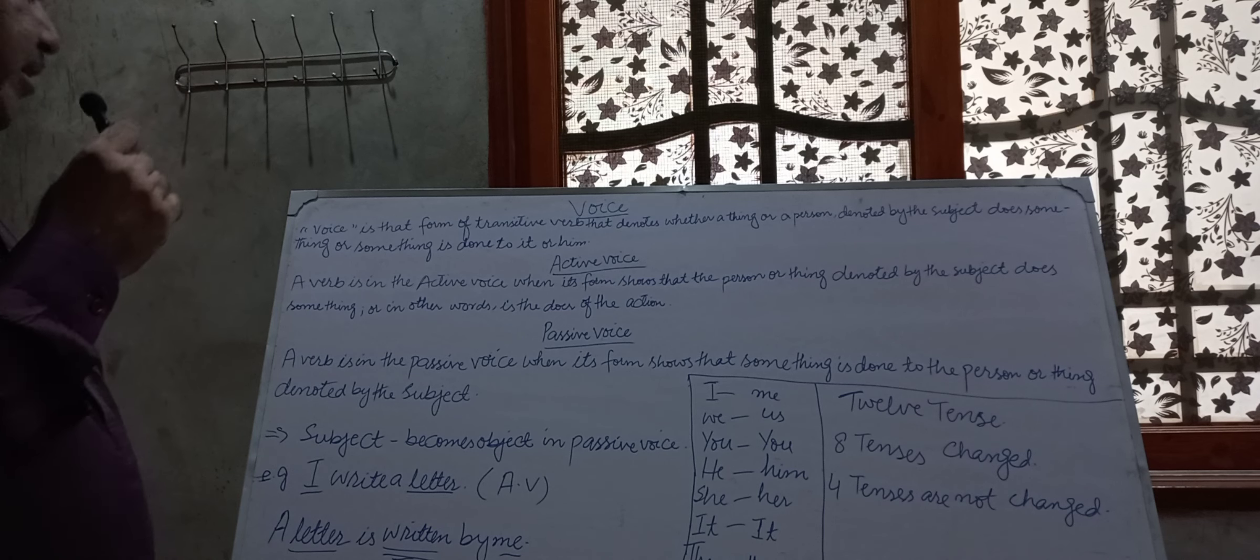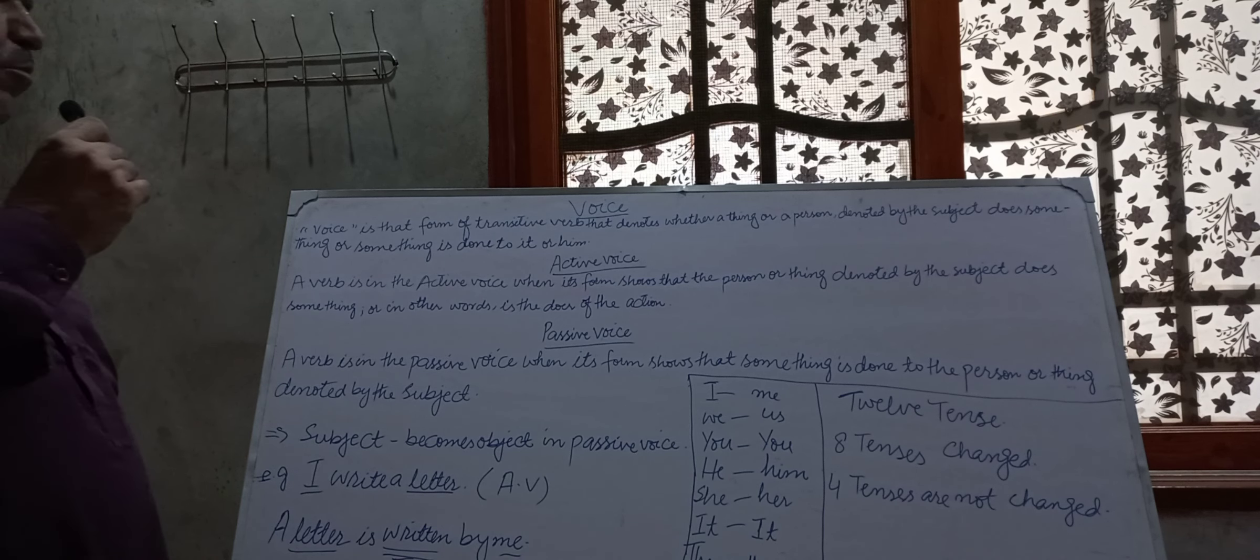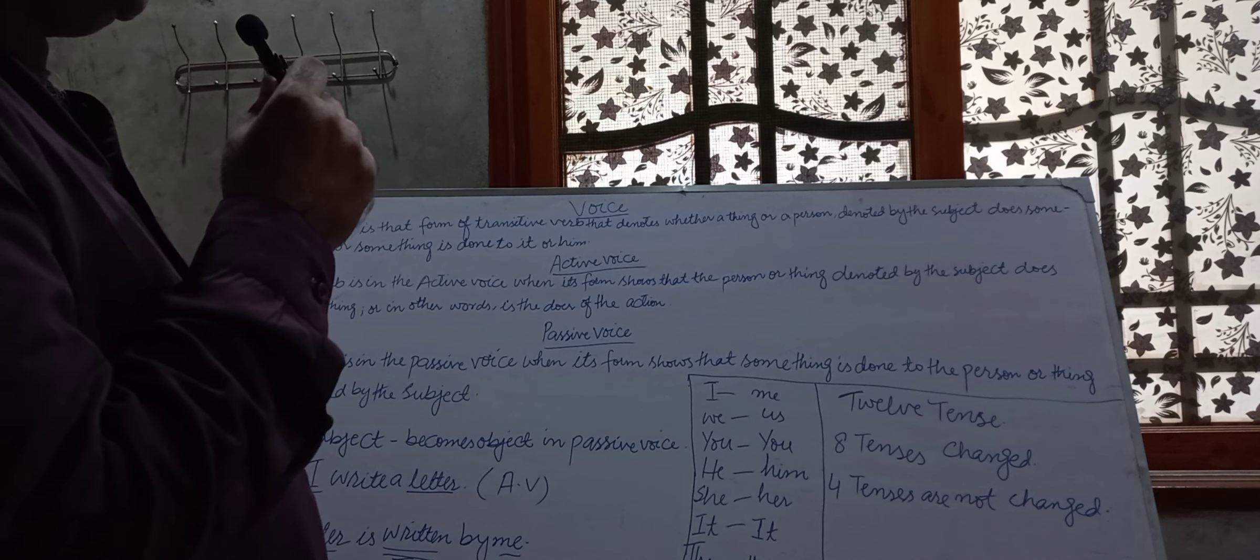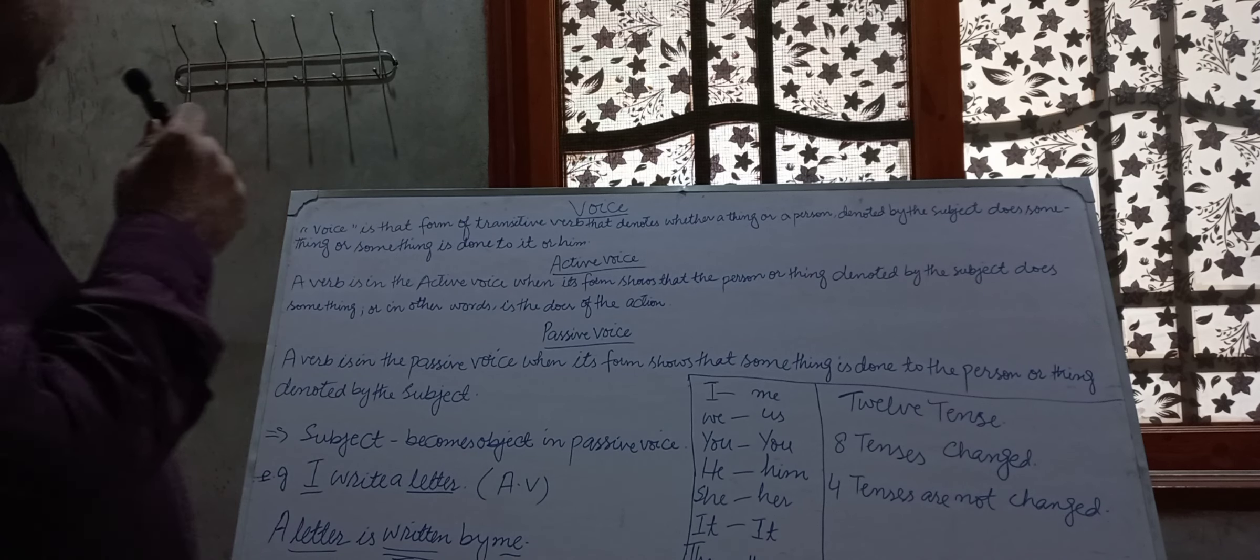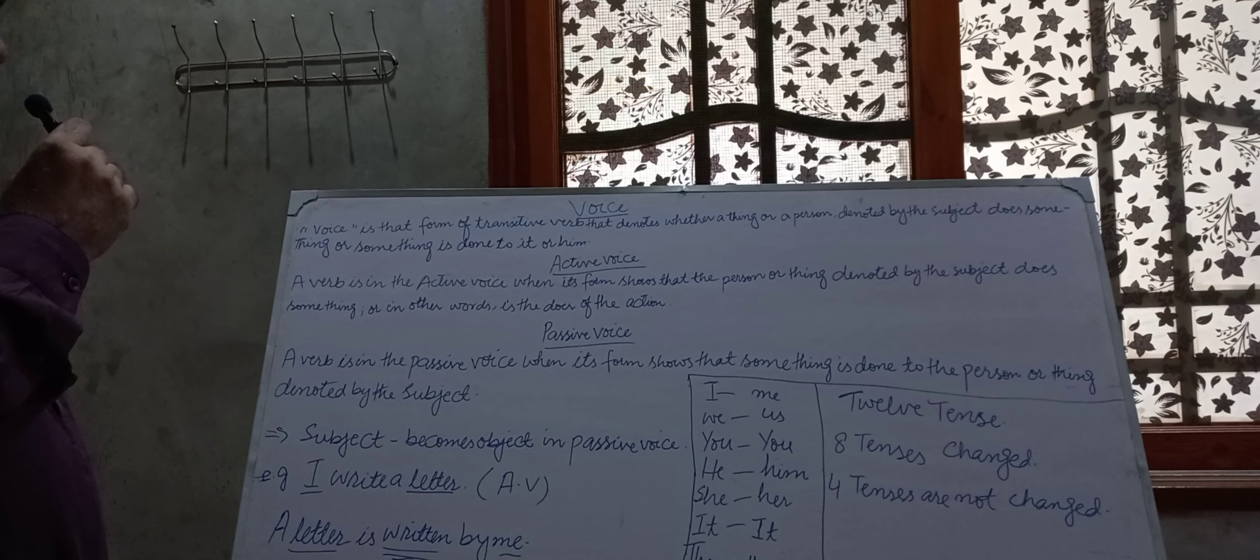What is passive voice? A verb is in the passive voice when its form shows that something is done to the person or thing denoted by the subject.